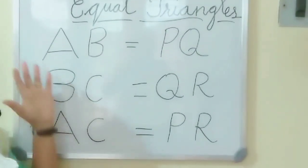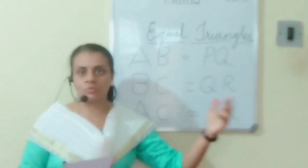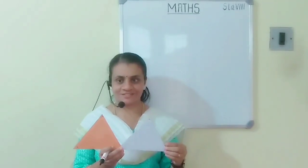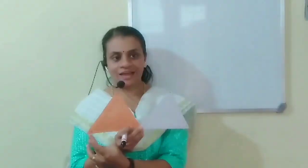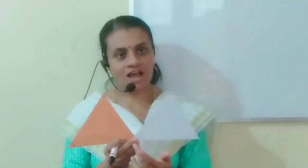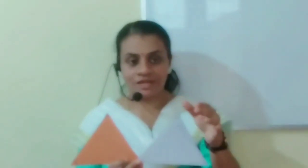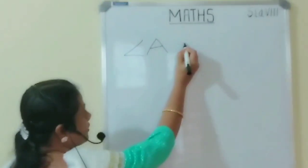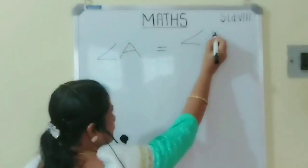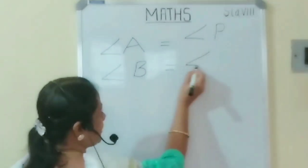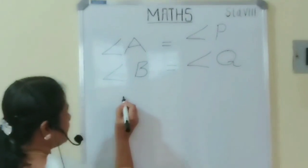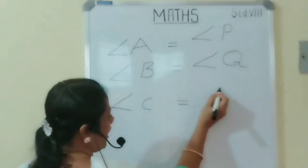Three sides of triangle ABC are equal to three sides of triangle PQR. Now let's look into the angles. Angle A equals angle P, angle B equals angle Q, and angle C equals angle R. These are the matching angles. Write it down: angle A equal to angle P, angle B equal to angle Q, and angle C equal to angle R.